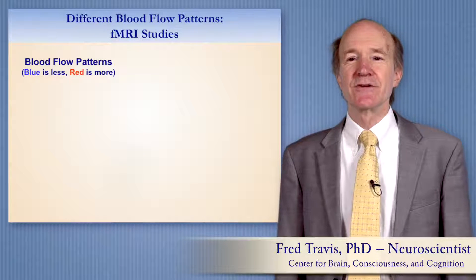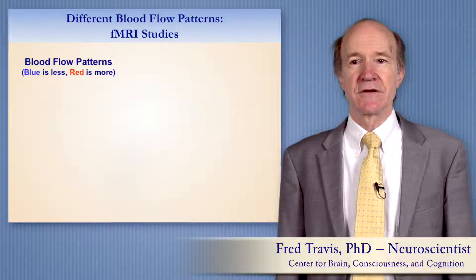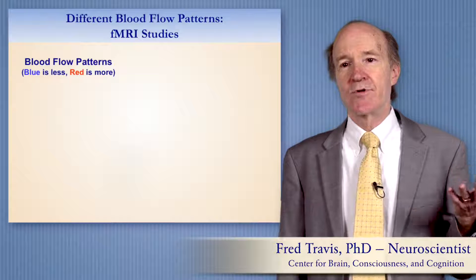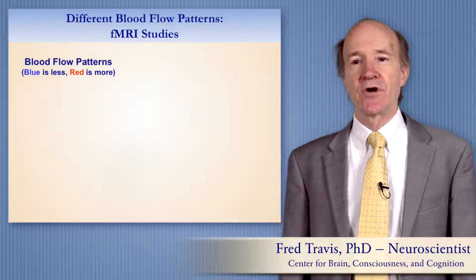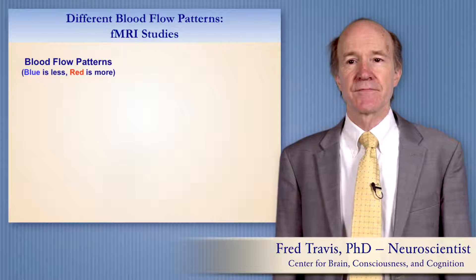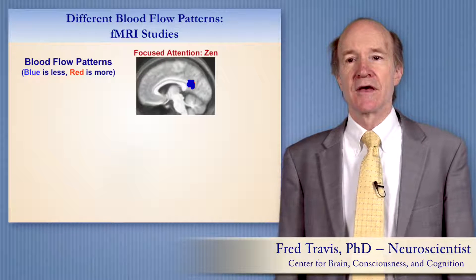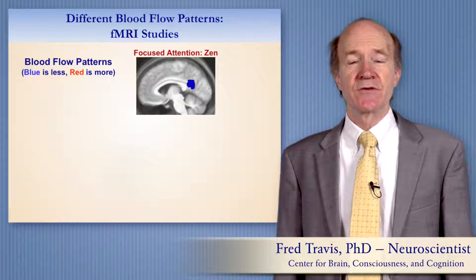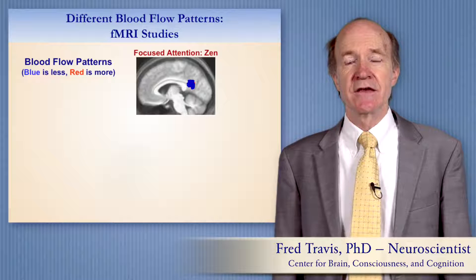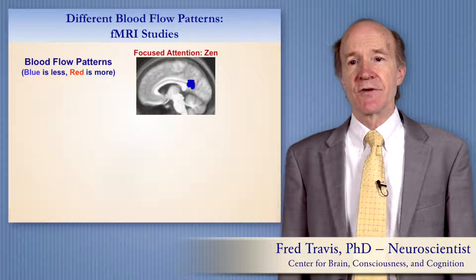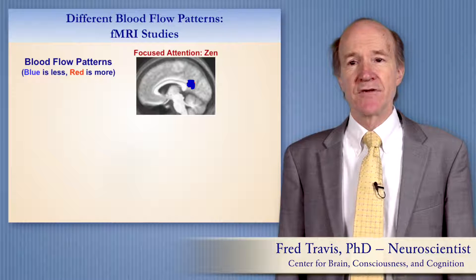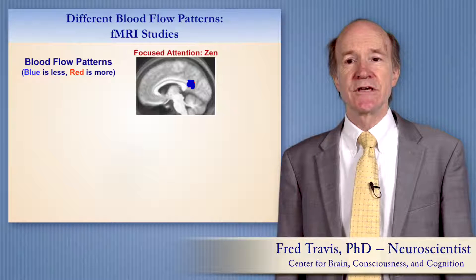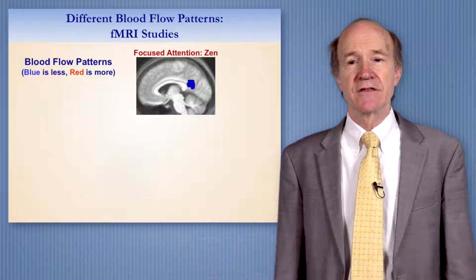Third, meditations differ in blood flow patterns. Blood flow is higher when that part of the brain is more active and lower when it is less active. In focus attention meditation — here we see Zen — there's decreased activity in the back part of the brain, shown by the blue area. That's part of the default mode network, and we see how focusing decreases activity in this network.